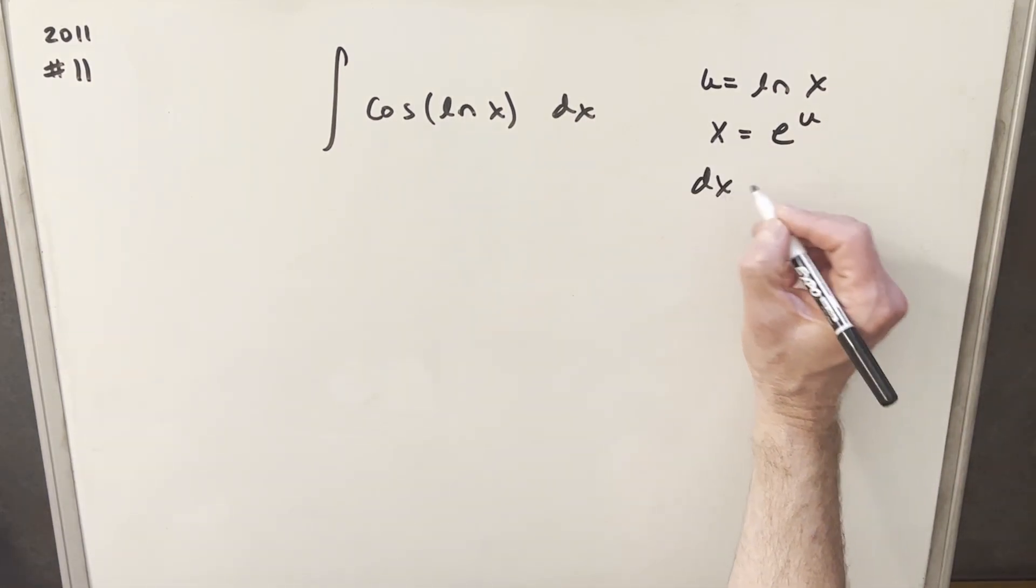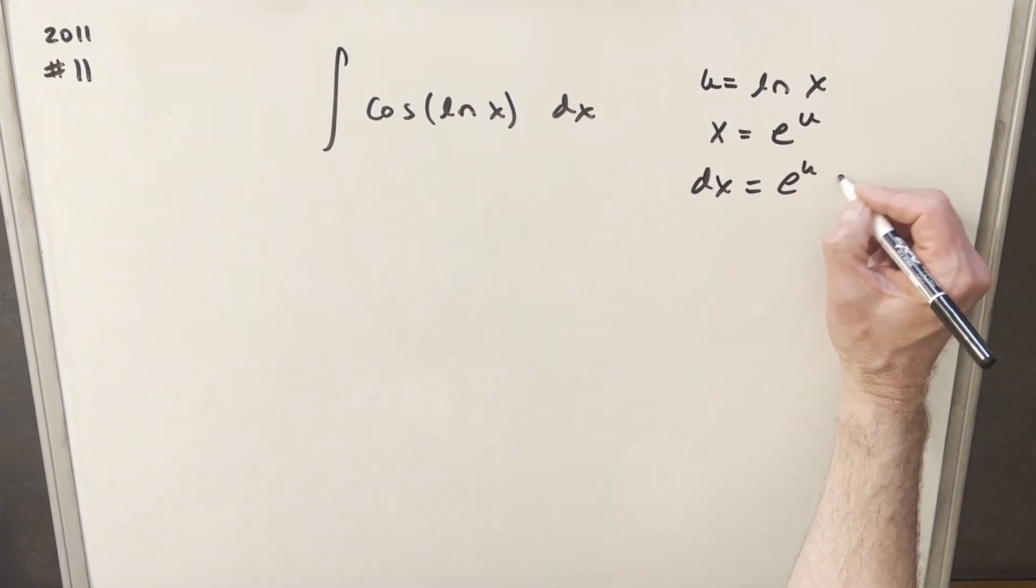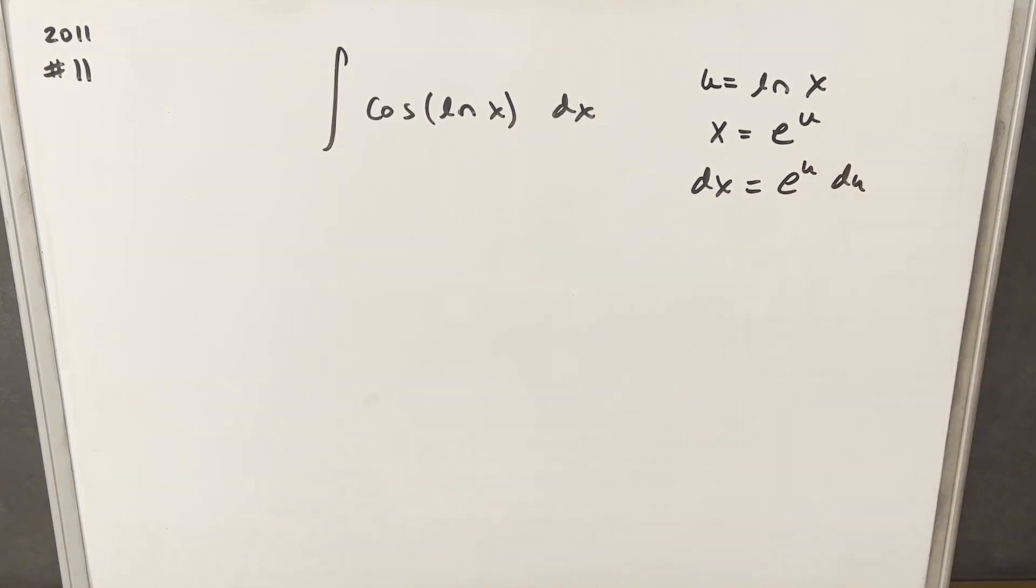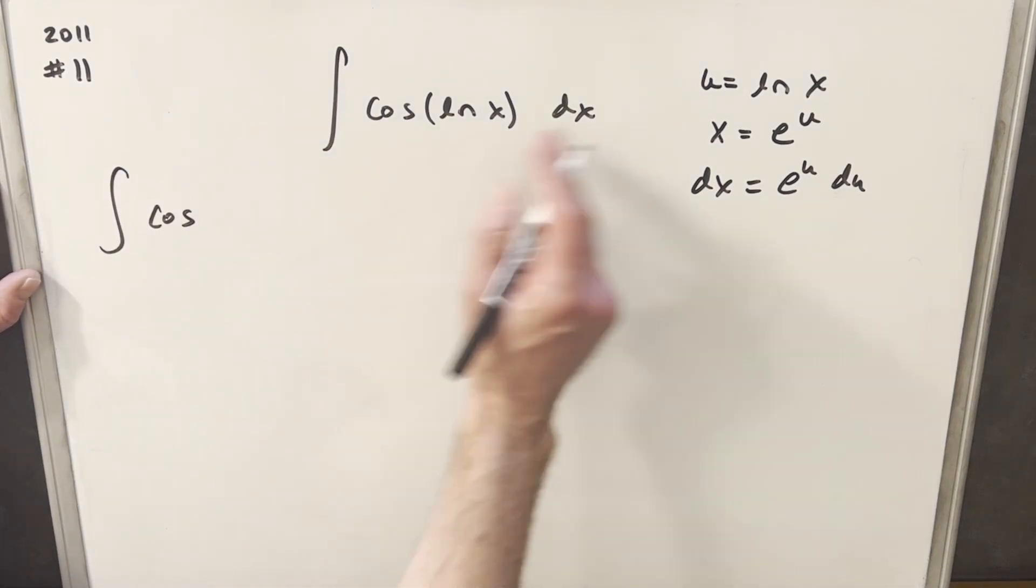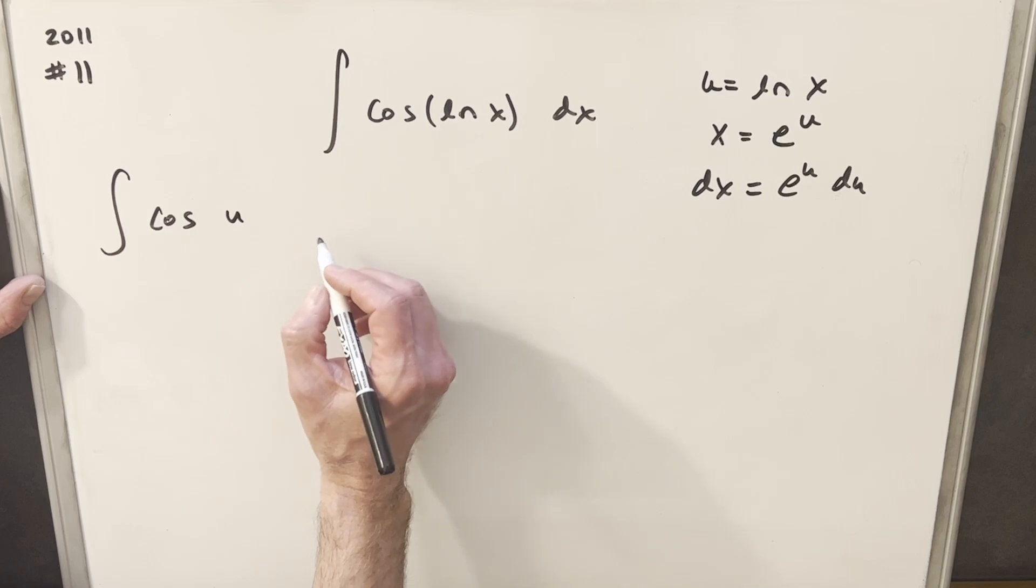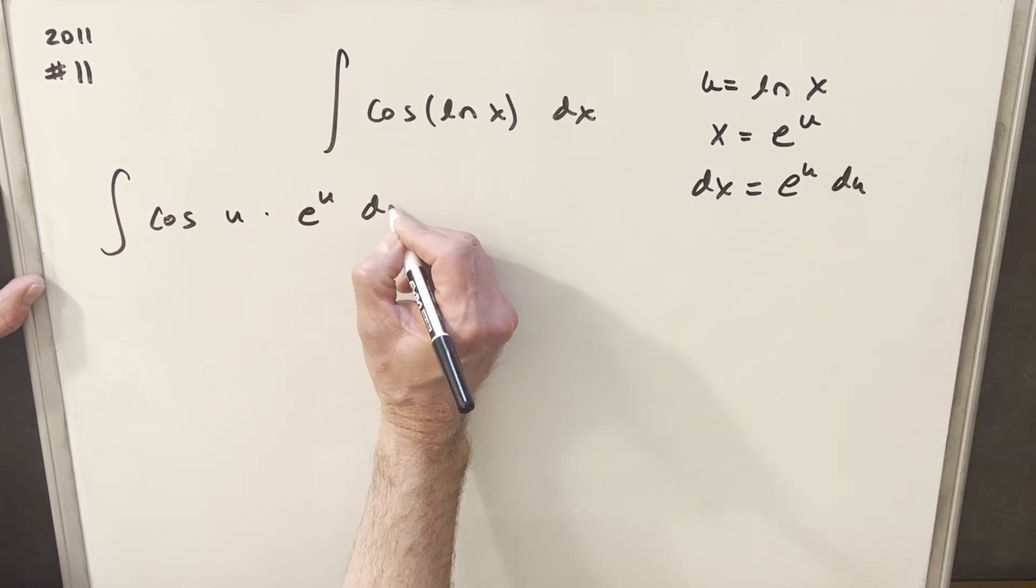And taking the derivative, we're going to find dx equals derivative of e to the u is just going to be e to the u du. Okay, then let's make our substitution. So we still have our cosine here. Natural log x is going to be u, so we have cosine u, and then our dx is this thing, so we have e u du.